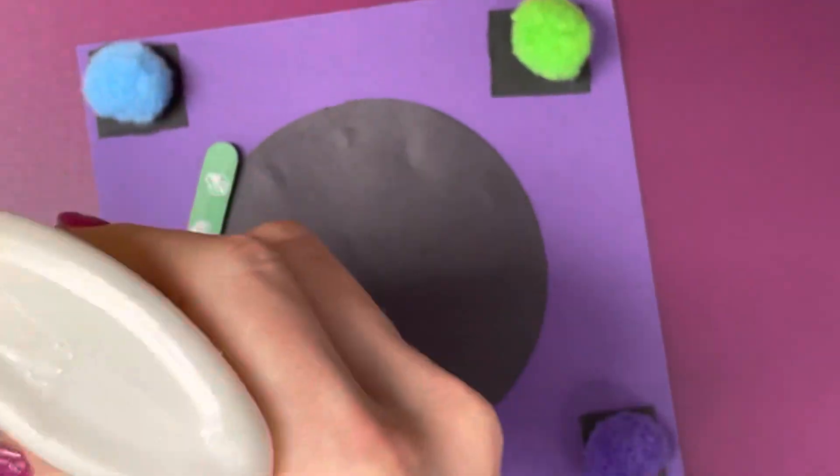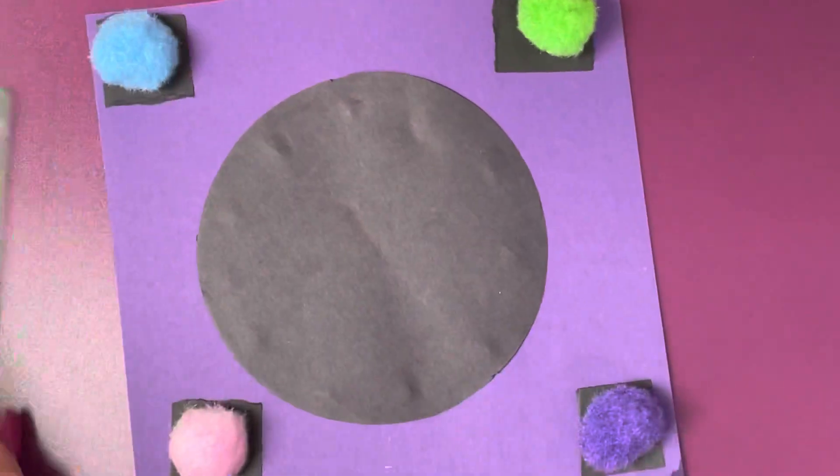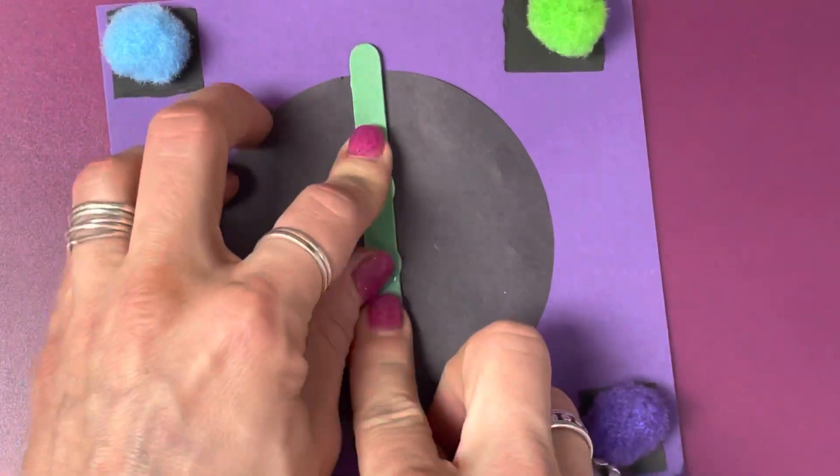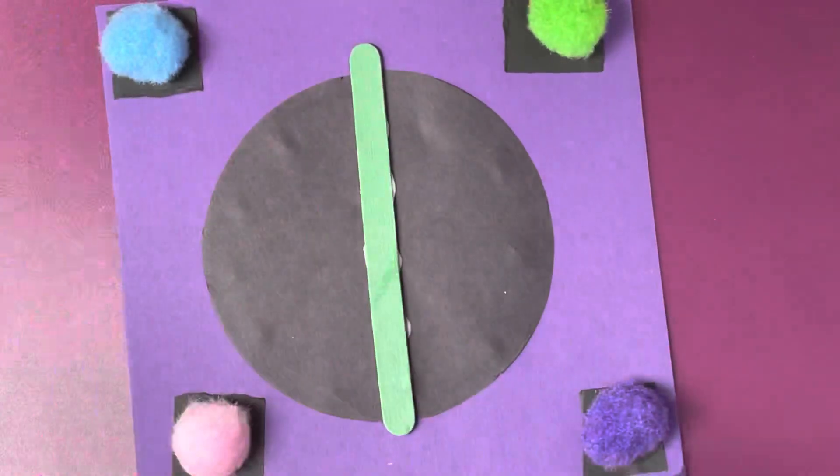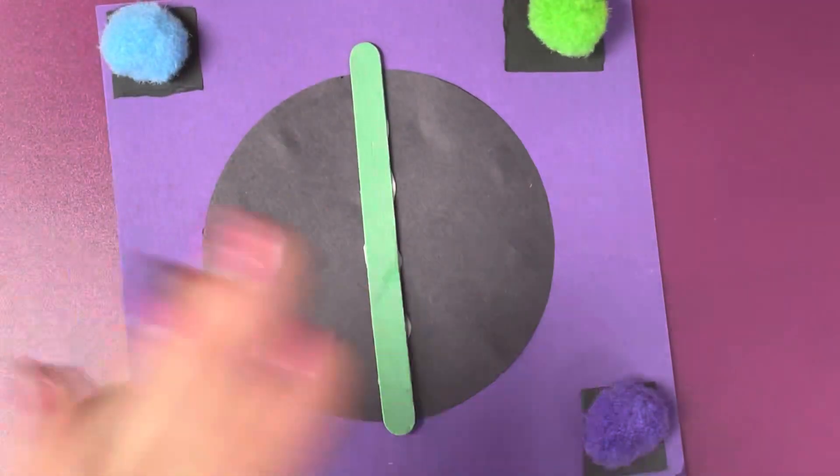If your hands get sticky while you work, you can grab one paper towel from underneath your table, hold it in the air. This will show me that you need a spray of water. Then you can use it to rub your hands and get all the stickiness off.